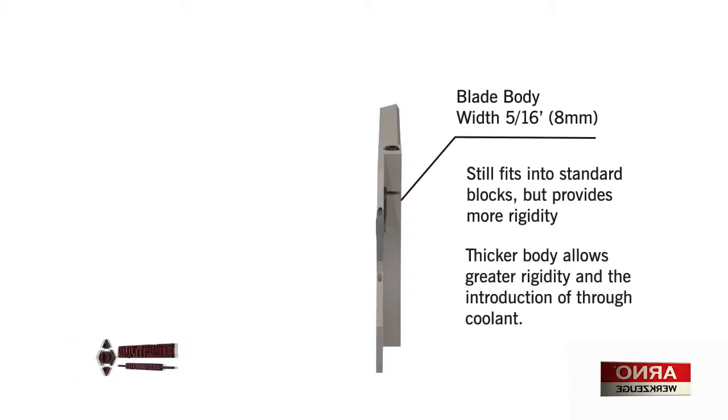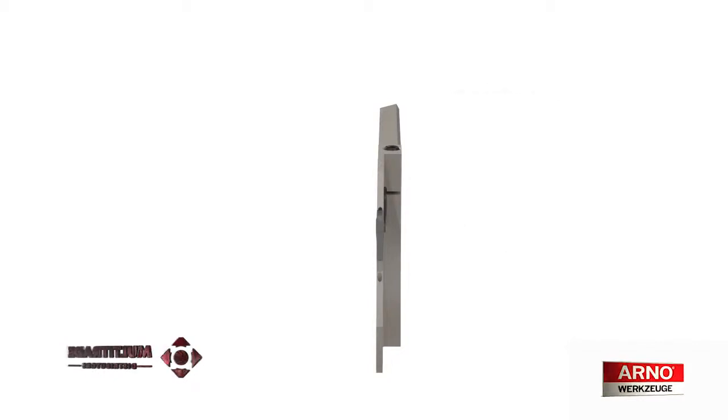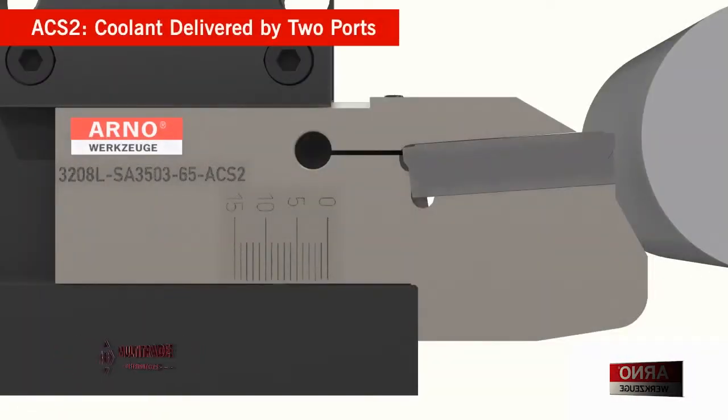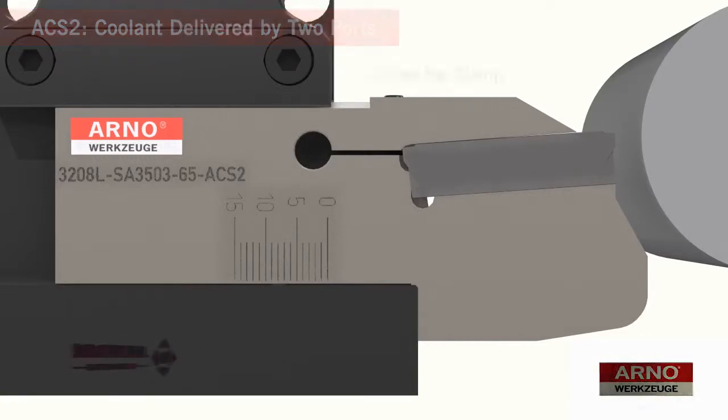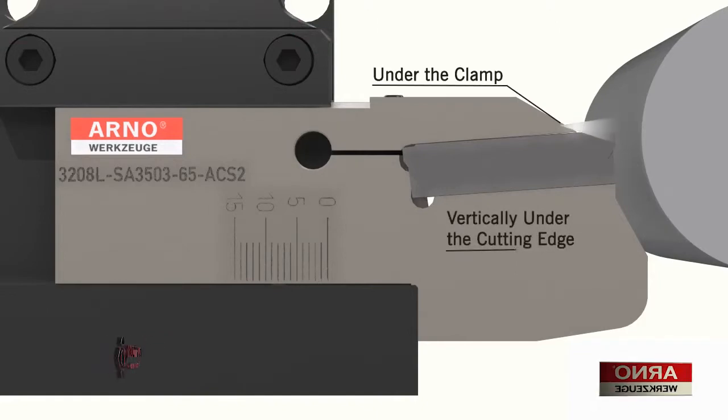It also accommodates secure screw-down insert clamping. The reinforced blade also features the Arno ACS-2 coolant delivery system, which directs coolant to the cutting zone through two ports, one port under the clamp and one vertically under the cutting edge.